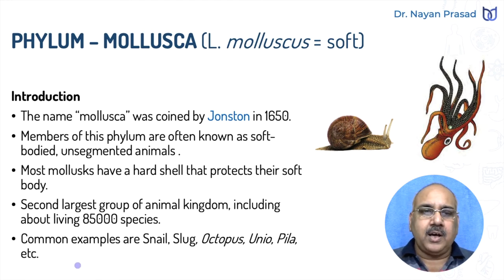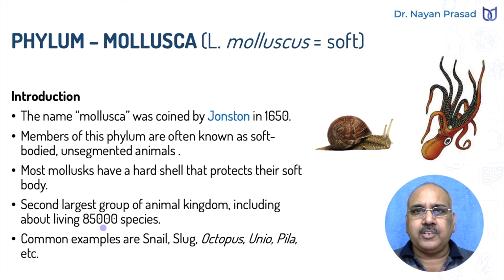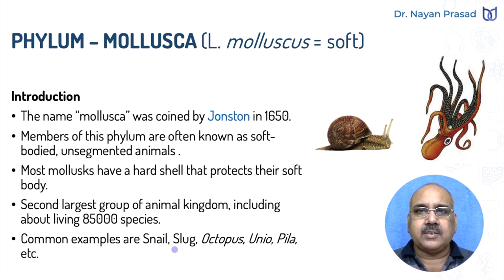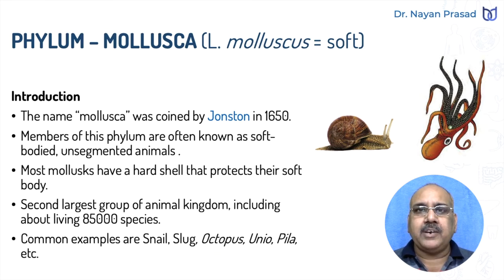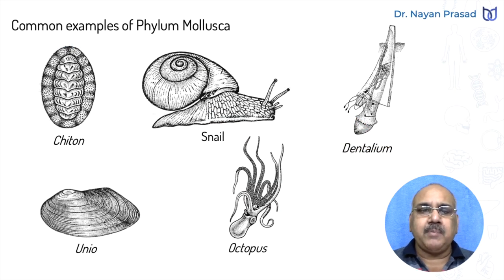Phylum Mollusca is the second largest group of the animal kingdom. It includes about 85,000 different species. The common examples are snail, slug, octopus, Unio, Pila, etc. Here are some images of these animals.